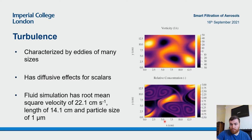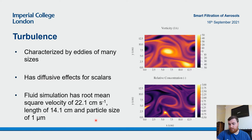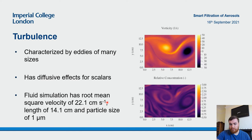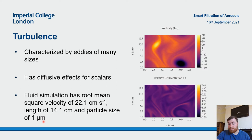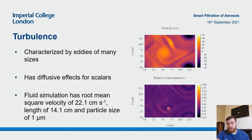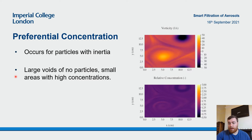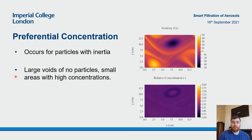In more detail, this fluid simulation has a root mean square velocity of 22.1 centimeters per second, a length of 14.1 centimeters, and a particle size of one micron. You can see we started off with quite a high concentration in the middle but now it is pretty evenly diffused. As we increase the particle size, however, they no longer behave as just passive scalars in the flow — their inertia due to the larger size causes a very different phenomenon.